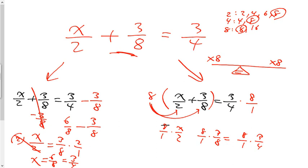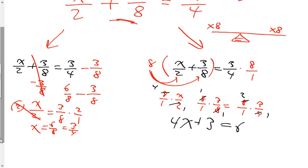I'm going to cross-reduce. 8 over 2 is 4 over 1, meaning that's going to be 4x. 8 over 8 reduces to 1 over 1, which is going to make that a positive 3. And 8 over 4 reduces to 2 over 1, making that a 6. So when I multiply both sides by 8, I end up with 4x plus 3 equals 6, which is much easier to solve.